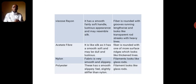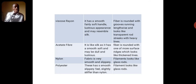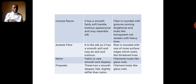Acetate fiber in appearance and handle is similar to silk — it has a smooth, soft handle and may be dull or lustrous. When viewed under the microscope, the acetate fiber is rounded with one or more surface ridges which look like thickened lines. Unlike viscose rayon which shows heavy lines, acetate shows thickened lines.